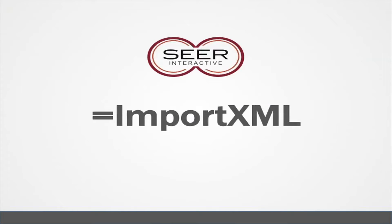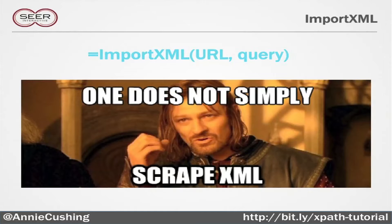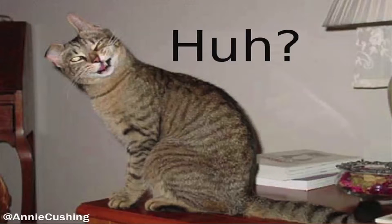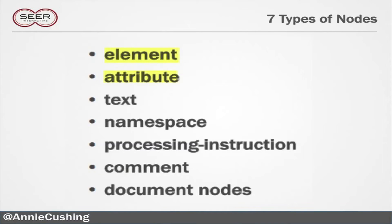Next up we have importXML. This one gets a little tricky. You just have URL and a query, but the query uses something called XPath. The W3 website says: 'XPath uses path expressions to select nodes or node sets in an XML document.' What does that mean? I have no idea. Because I'm not a developer, I suffer from a deplorable lack of curiosity. But I can tell you this: there are seven different types of nodes, and the two you're going to use most for scraping are elements and attributes.